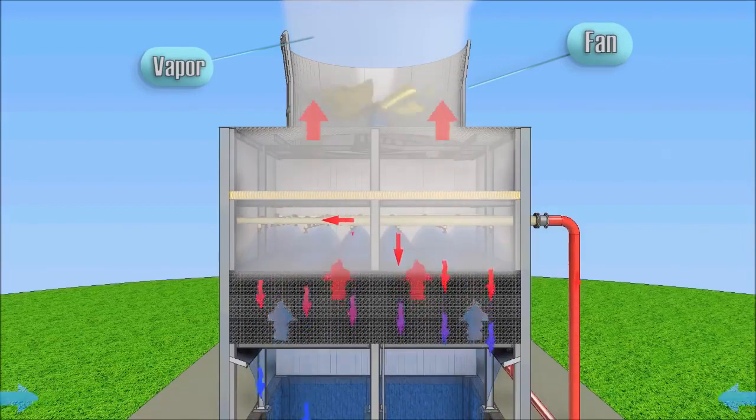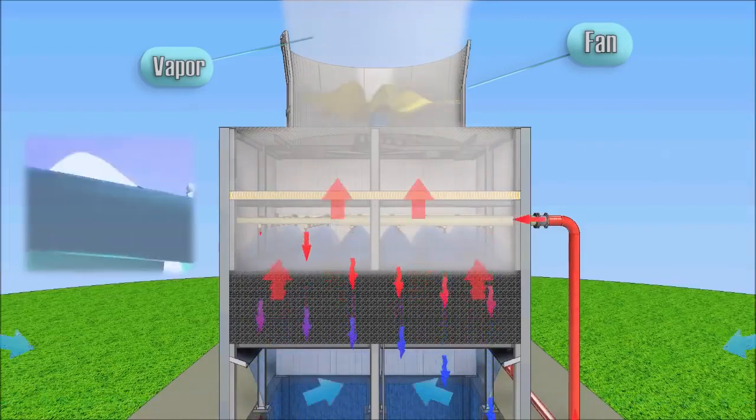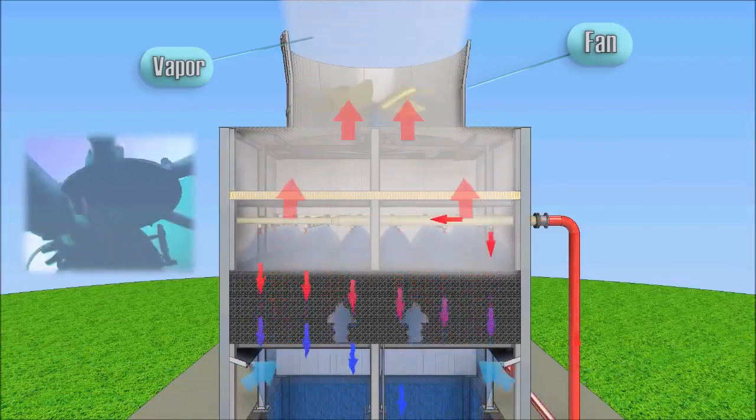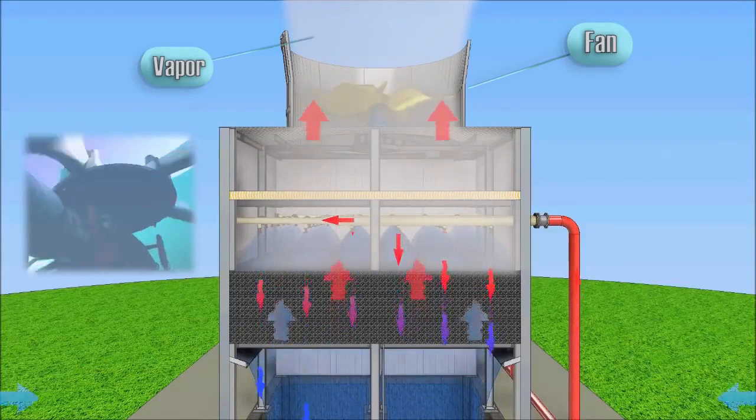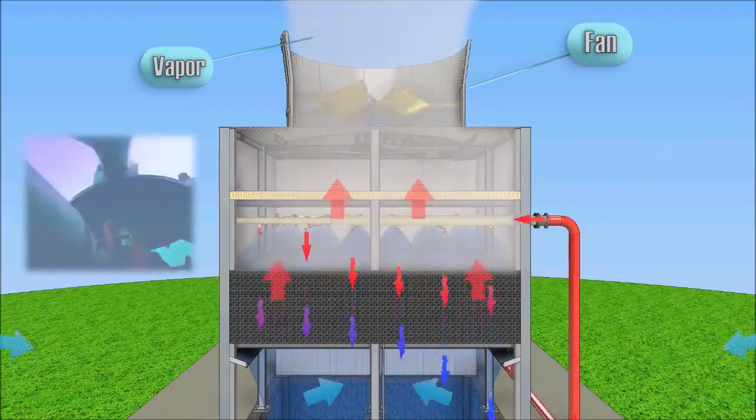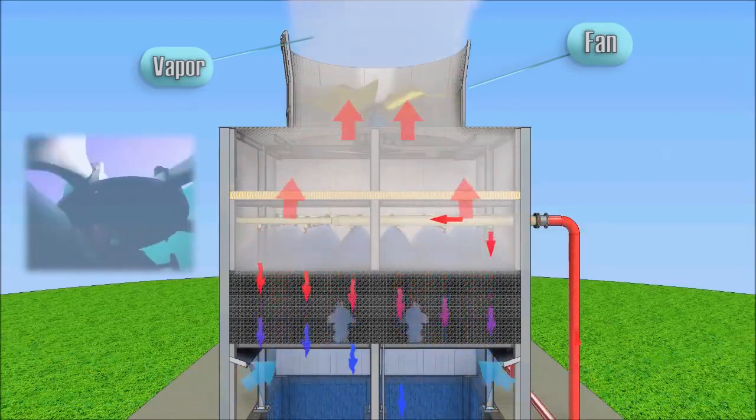The air passes through the fill, saturated with water vapor. The water cooling efficiency of the cooling tower is controlled by water and air supply rates, changing the fan speed.